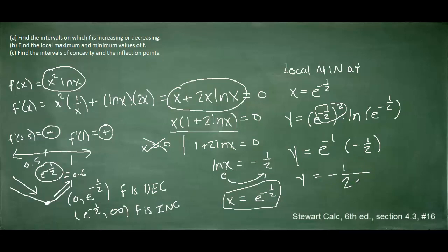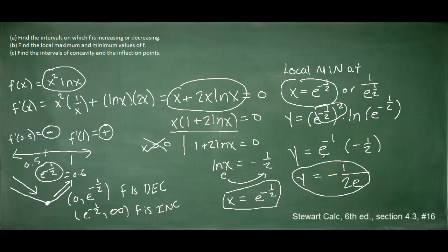So the y-coordinate is negative 1 over 2e to the positive first power. We can change the negative power to a positive power by shifting the e into the denominator. So the x-coordinate of the local minimum is e to the negative 1 half, or equivalently 1 over e to the positive 1 half, and the y-coordinate is negative 1 over 2e. We've now answered parts a and b. Let's go on to answer part c.